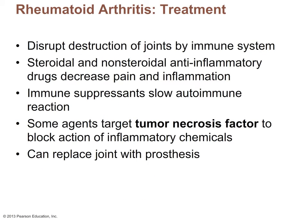Unlike osteoarthritis, we usually can't treat rheumatoid arthritis surgically because it affects joints bilaterally and throughout the body. Strategies include disrupting joint destruction using steroids such as prednisone, or non-steroidal anti-inflammatory drugs (NSAIDs) like aspirin and ibuprofen to reduce inflammation. Another strategy is to use immunomodulator drugs to suppress the immune system, suppressing the autoimmune response responsible for damaging joints. In a few cases, prosthetic joint replacements can be used, but because RA affects many joints, this only solves part of the problem.